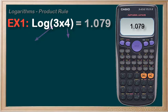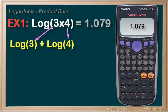If we were to break this up using our new product rule, it would look like this: log of three plus log of four. We recognize that the base in all of this would be 10, the default. In our calculator, log of three plus log of four gives us the same thing, 1.079 confirmed.